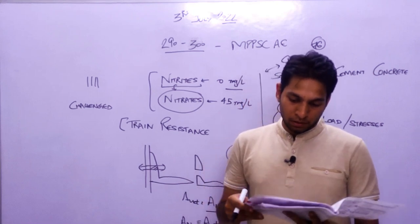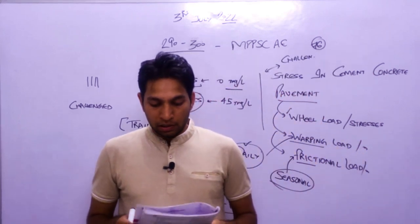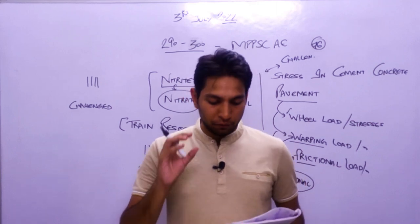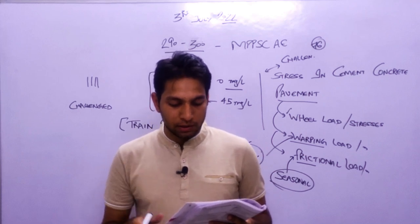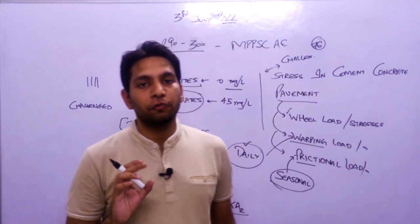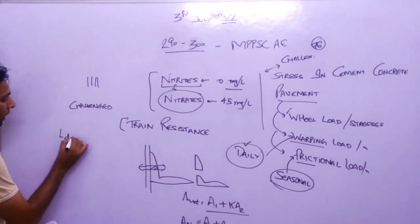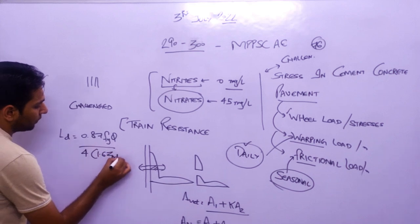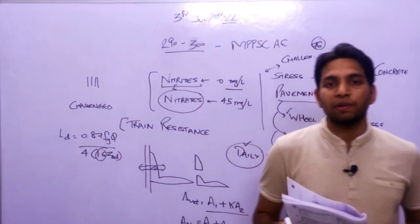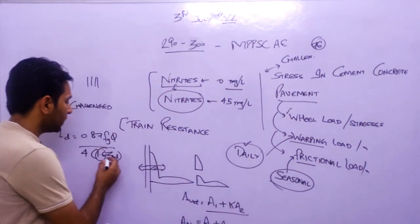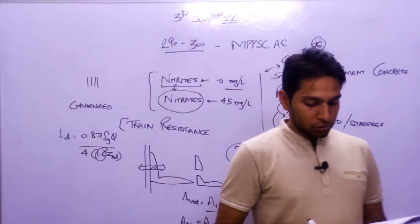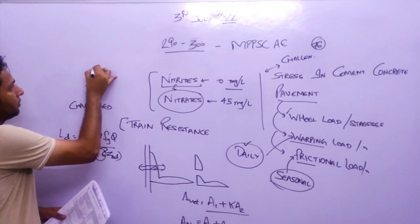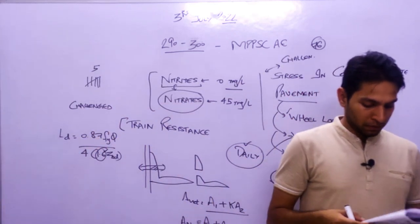The fifth challengeable question asks for the development length of a deformed bar as per IS 456:2000 in limit state design. The correct formula should be 0.87·fy divided by (4 × 1.6·τbd), where the factor 1.6 accounts for the deformed bar nature — a 60% increase over plain bars. None of the given options match this formula, so this question should be removed from the paper entirely.